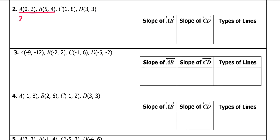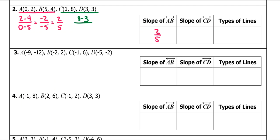For AB, subtract our x's: two minus four. Subtract our y's: zero minus five. Two minus four is negative two, zero minus five is negative five. A negative and a negative make a positive two-fifths. Then subtract our y's: eight minus three is five. Subtract our x's: one minus three is negative two, giving negative two-fifths. The positive became a negative and it flipped, so these are perpendicular.